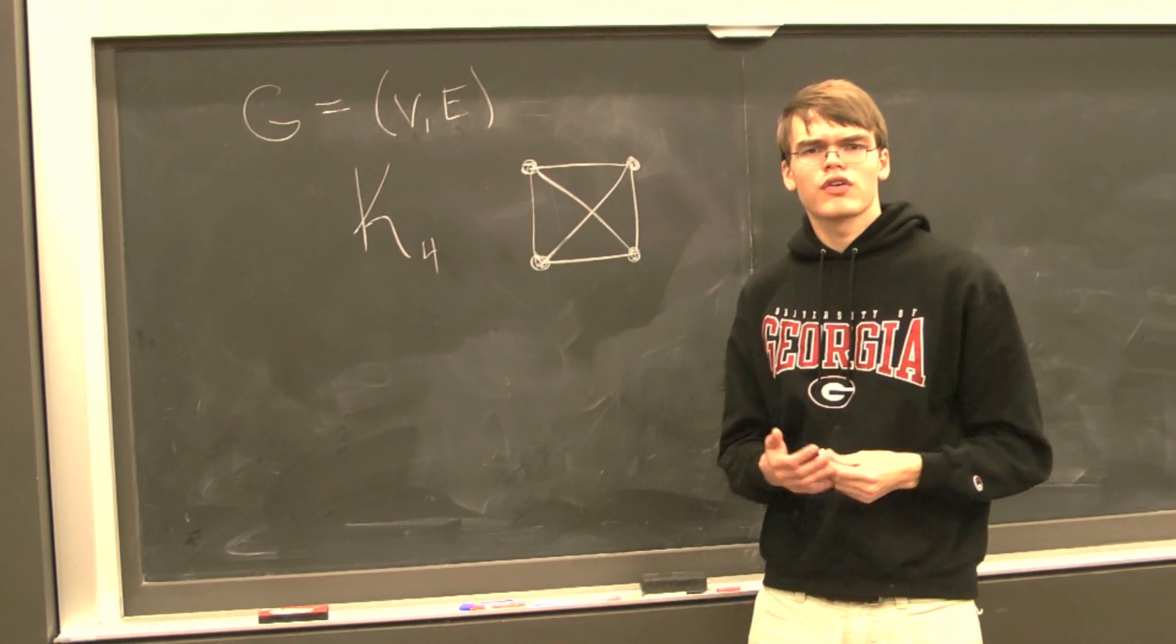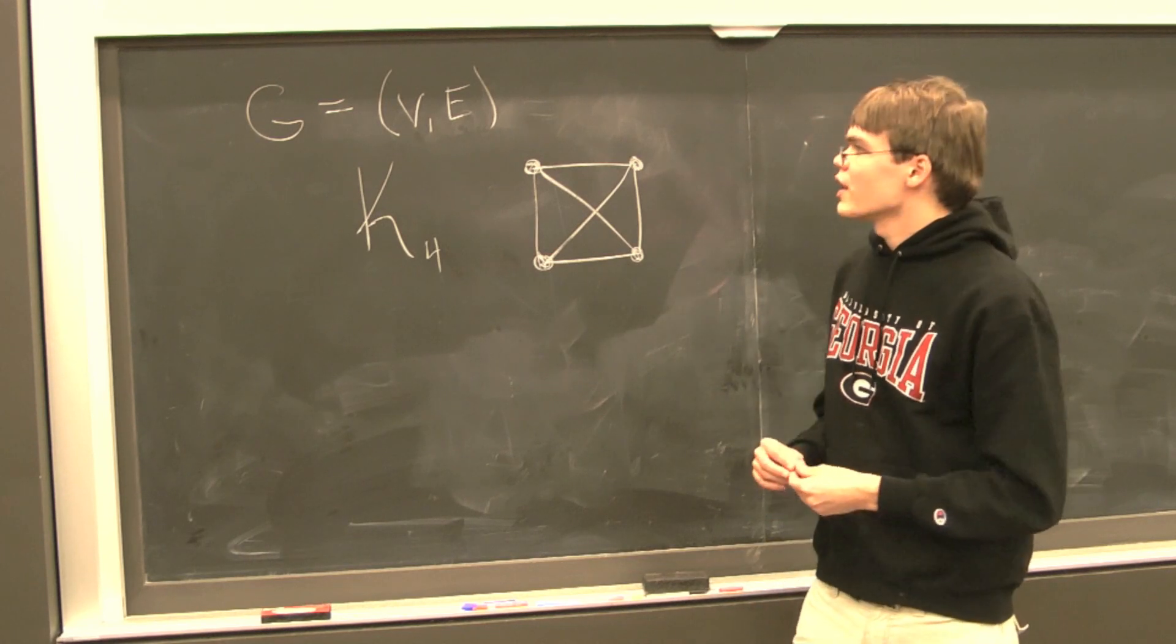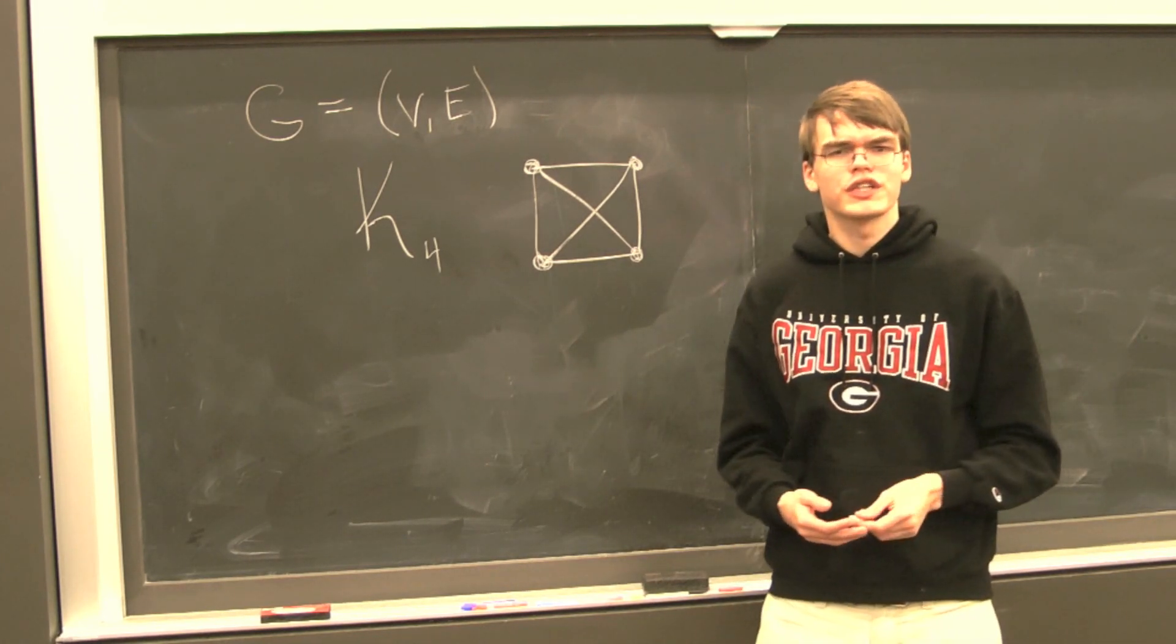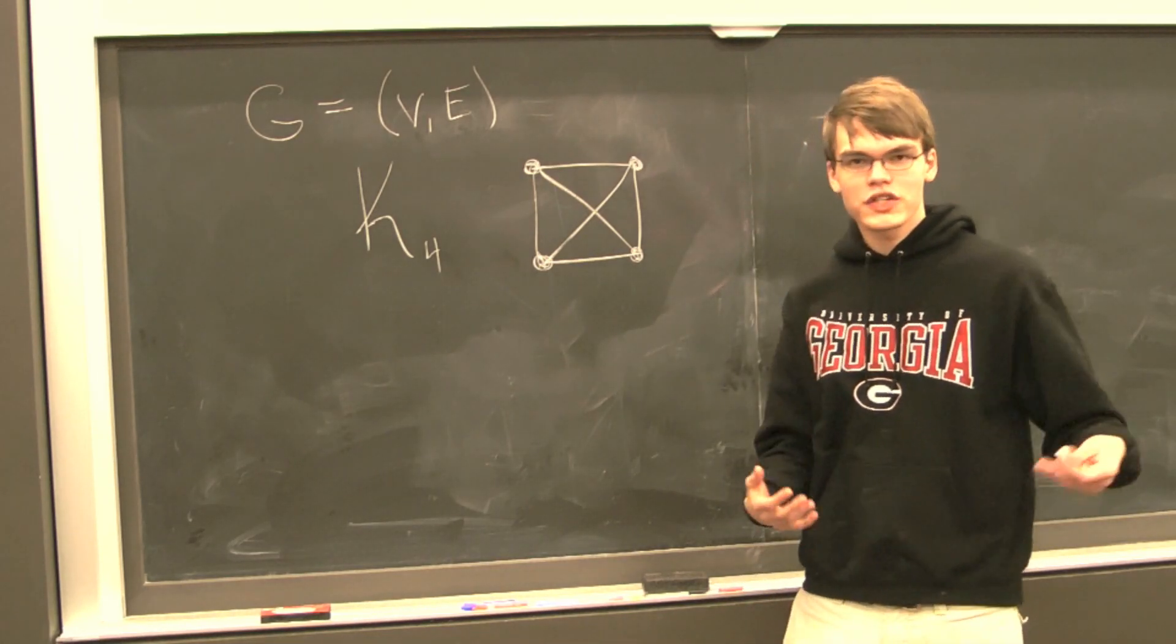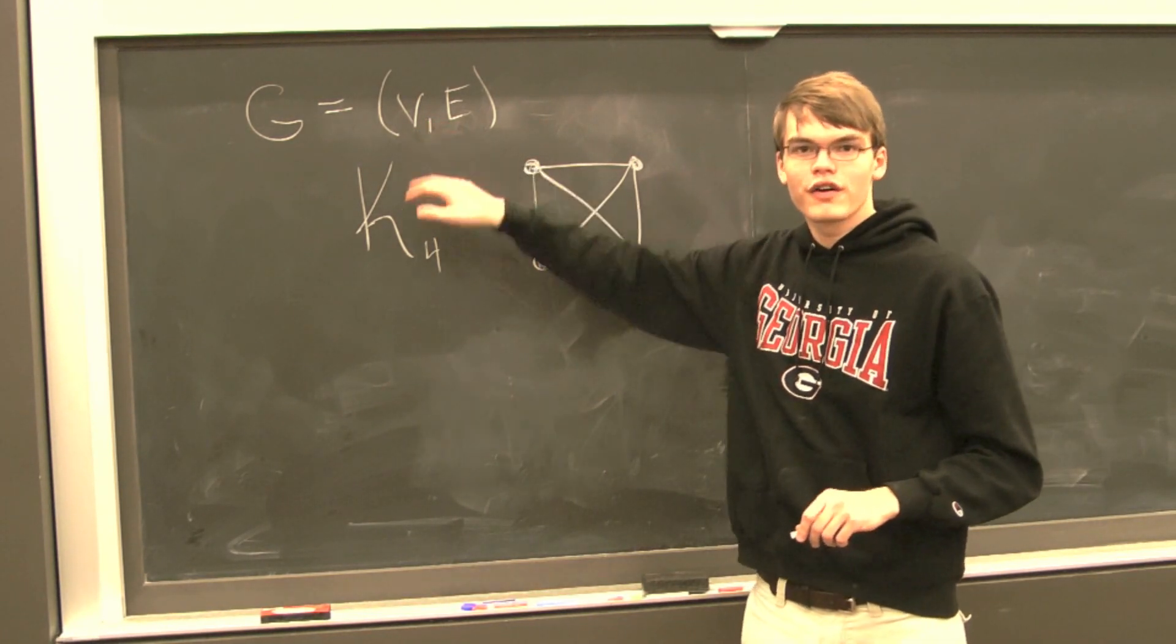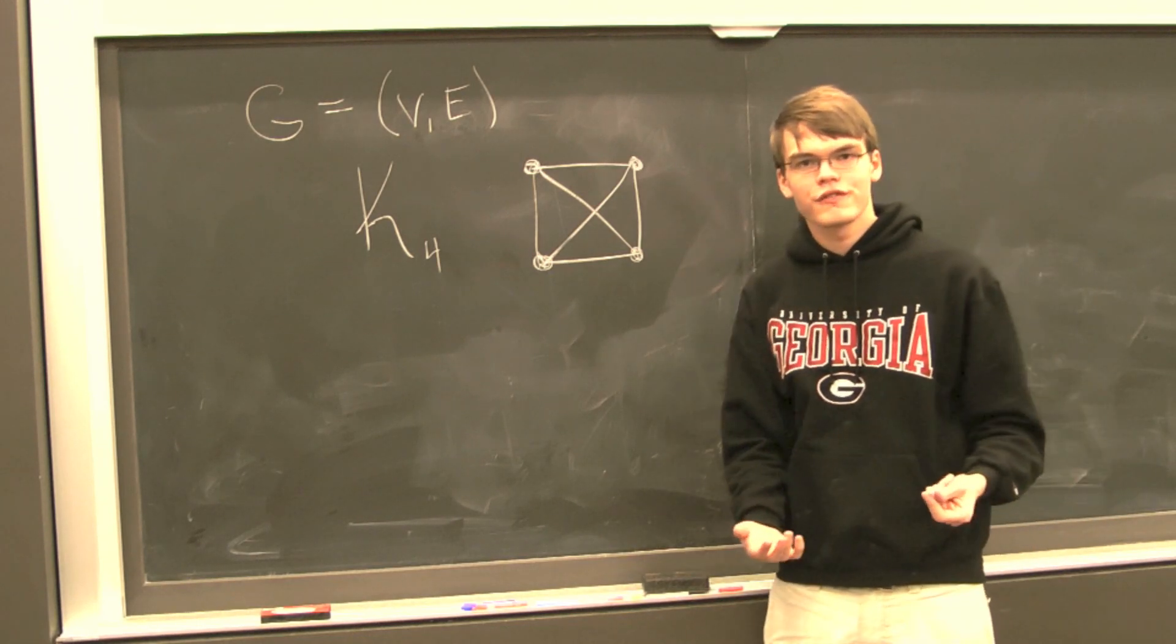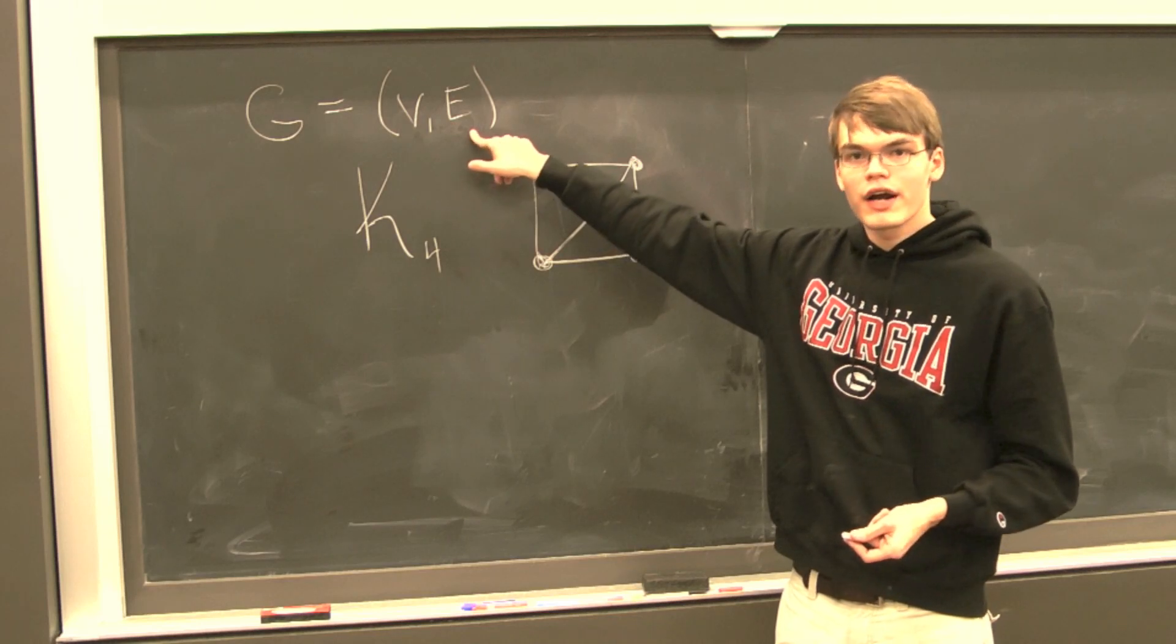Now from here, I want to get across the idea of a subgraph. A subgraph is a very intuitive notion. It's probably exactly what you think it is. A subgraph is a graph on a subset of vertices of an original graph, and then you draw edges between those vertices, so long as those edges were also edges in our original graph.